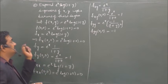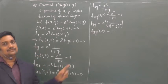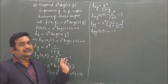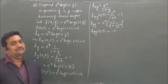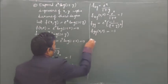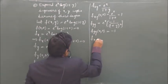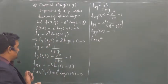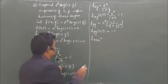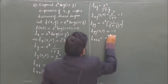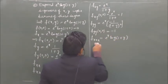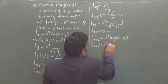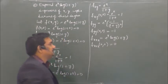Since the problem asks for terms up to third degree, we need third-order derivatives. The next term is (1/3!) · x³ · fxxx at (0,0). fxxx is the derivative of fxx, which is e^x · log(1+y). Evaluated at (0,0), this is e^0 · log(1) = 0.